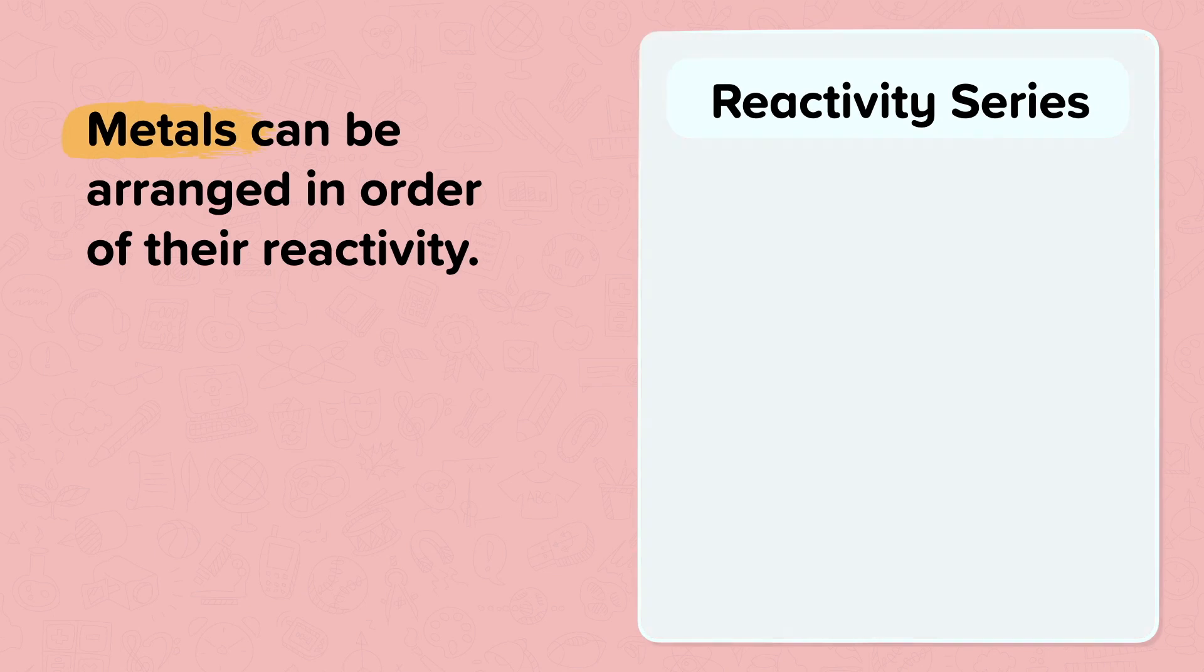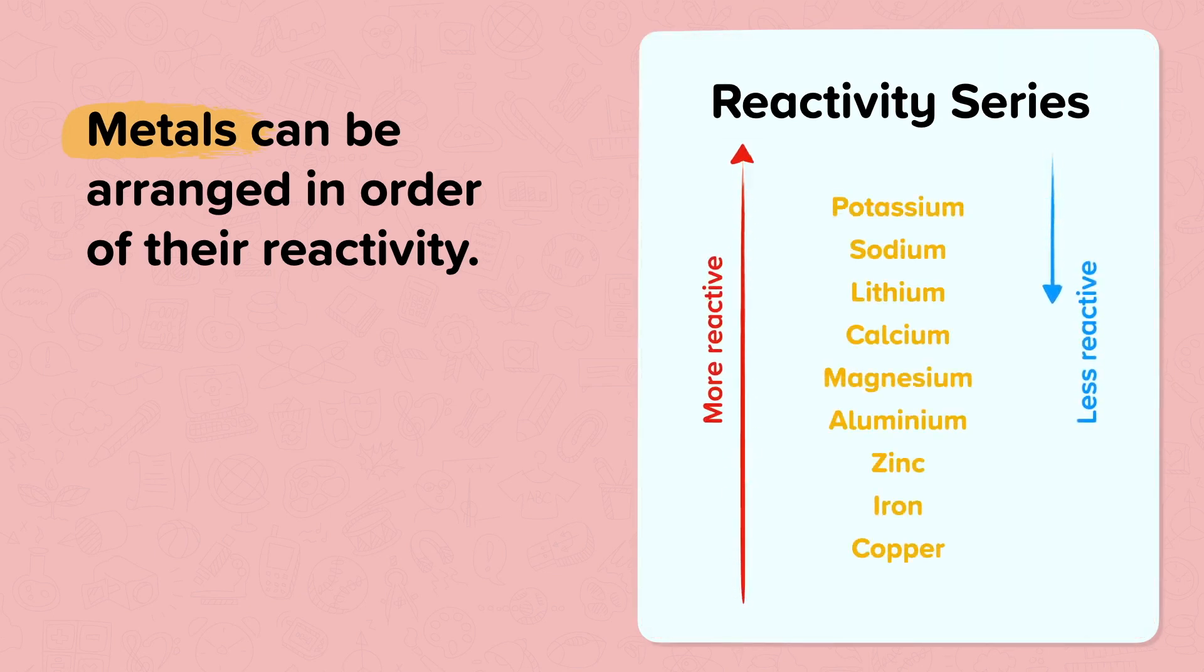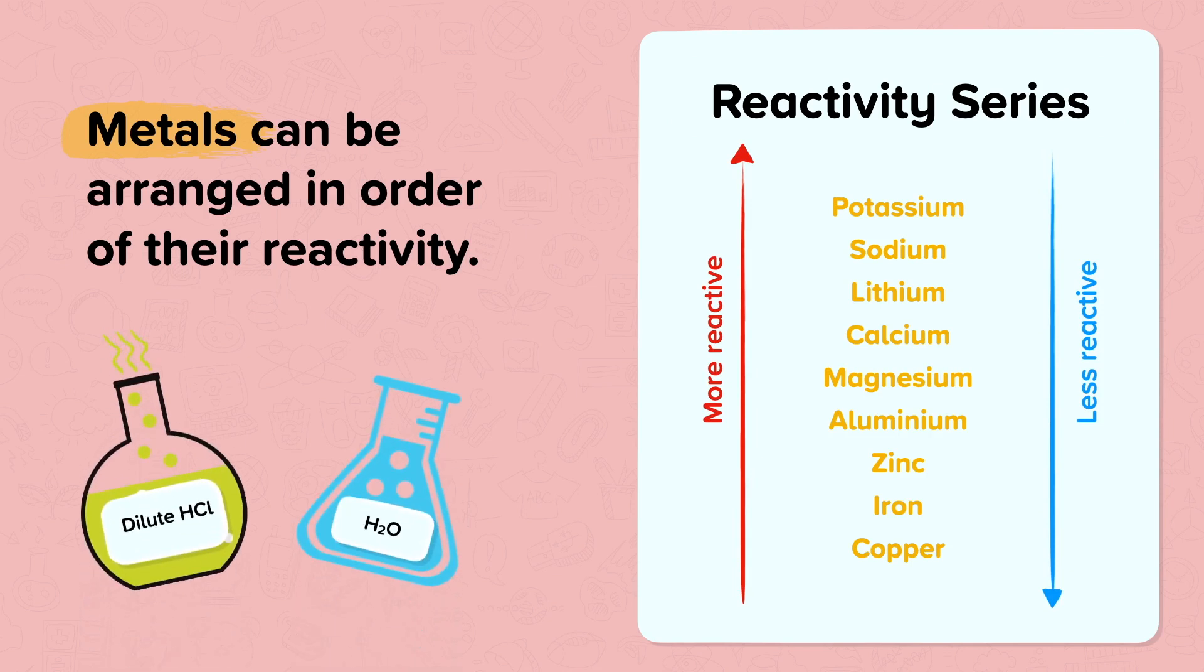The reactivity series shows metals potassium, sodium, lithium, calcium, magnesium, aluminium, zinc, iron and copper in order of most reactive to least reactive. This is based on their reactions with dilute acids and water.